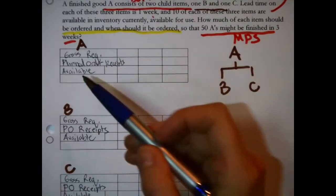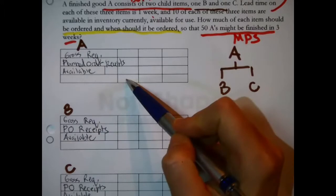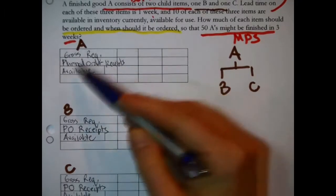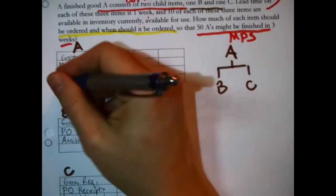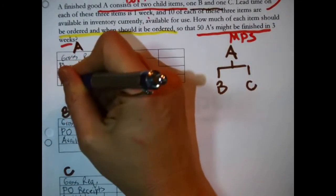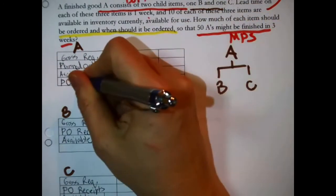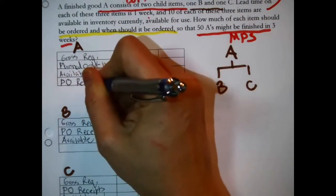And then the last line in each one of the records is the planned order releases. How much to order and when you order. Seeing as how it didn't work out fitting it for planned order receipts with my handwriting, I'm going to abbreviate again. P for plan, O for ordered. This is releases.